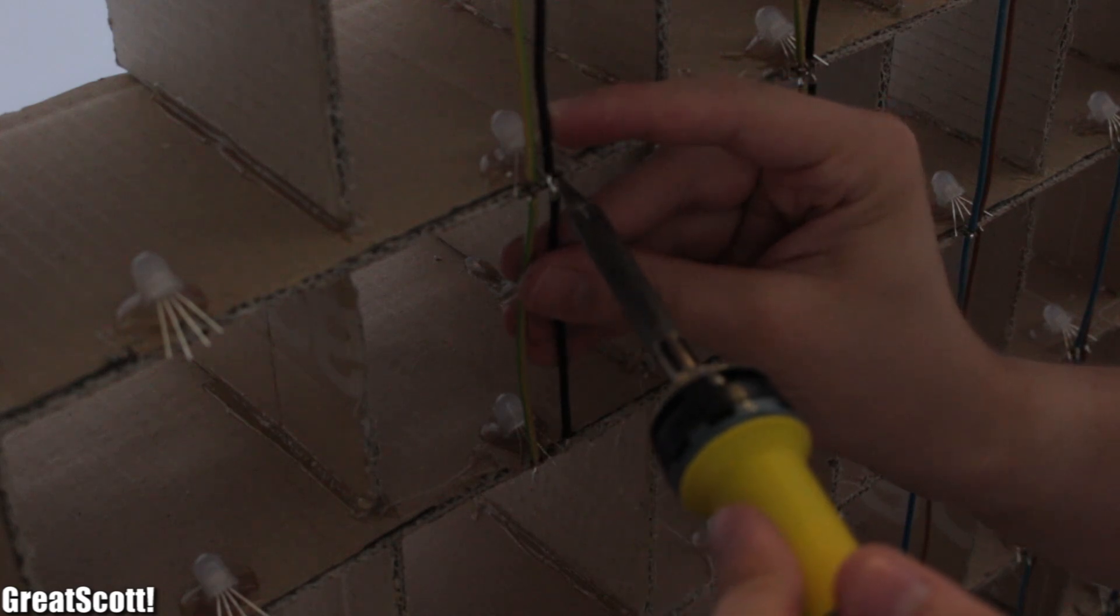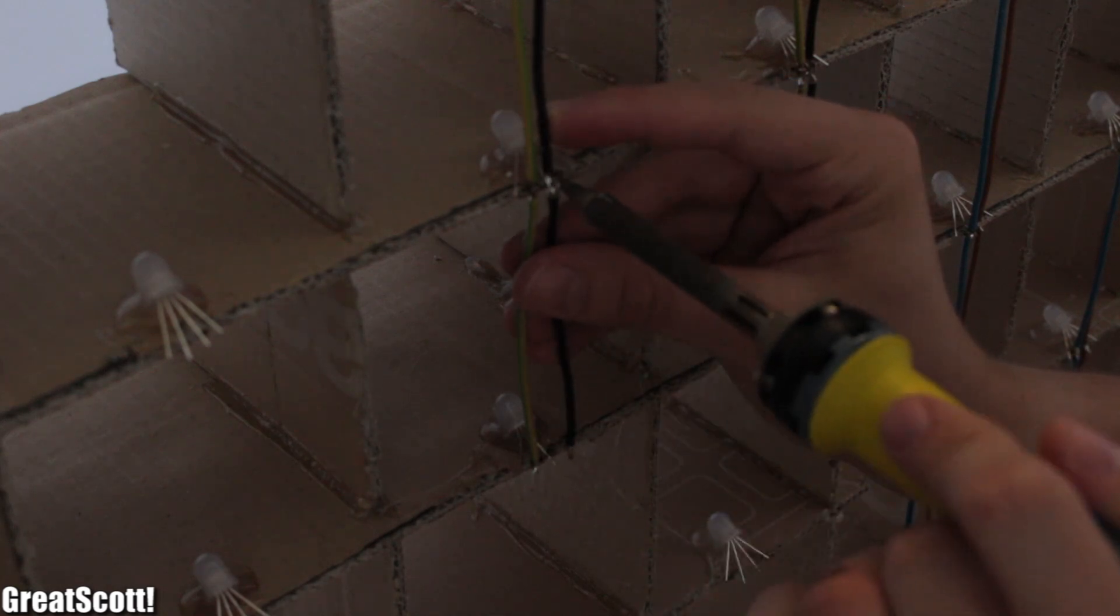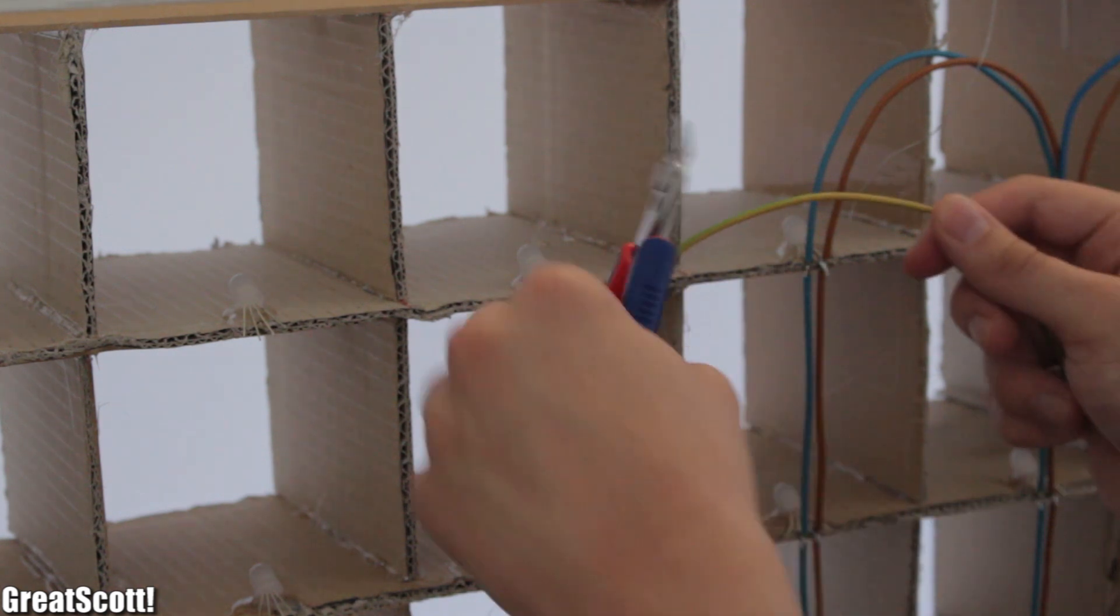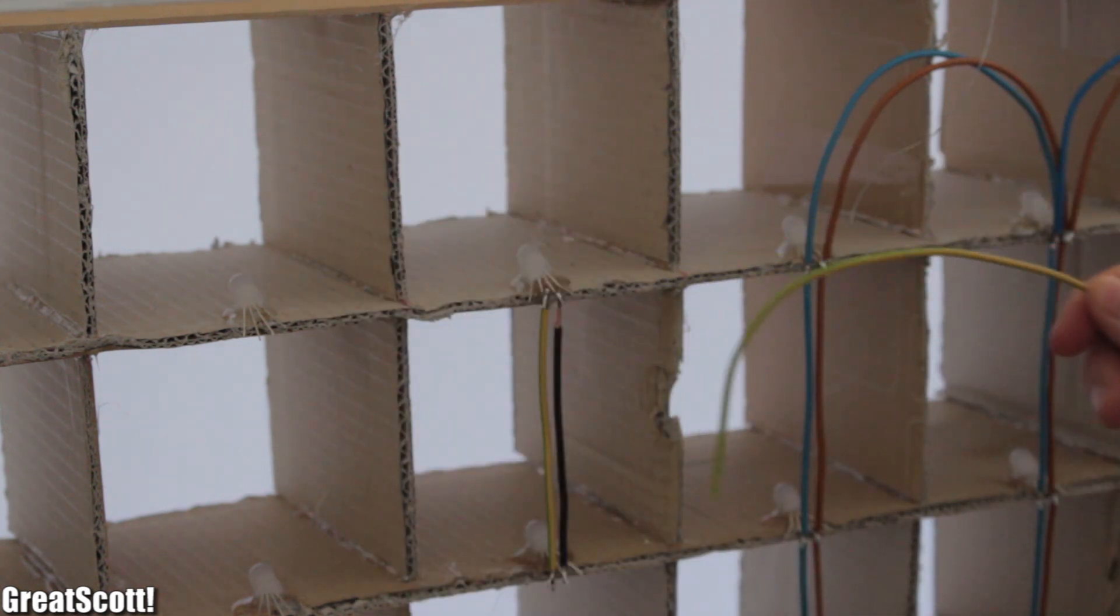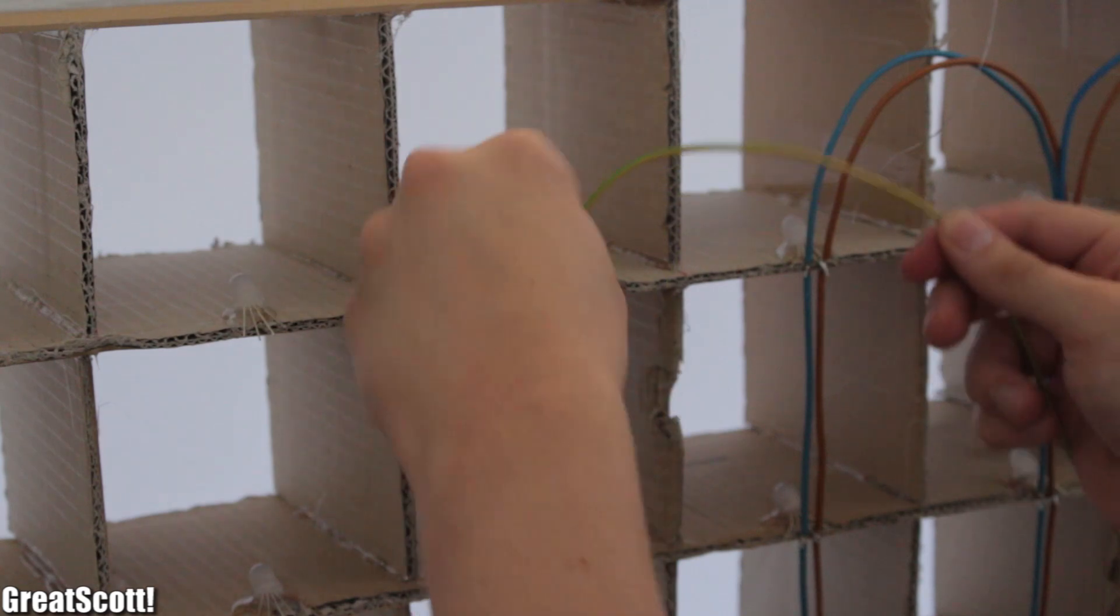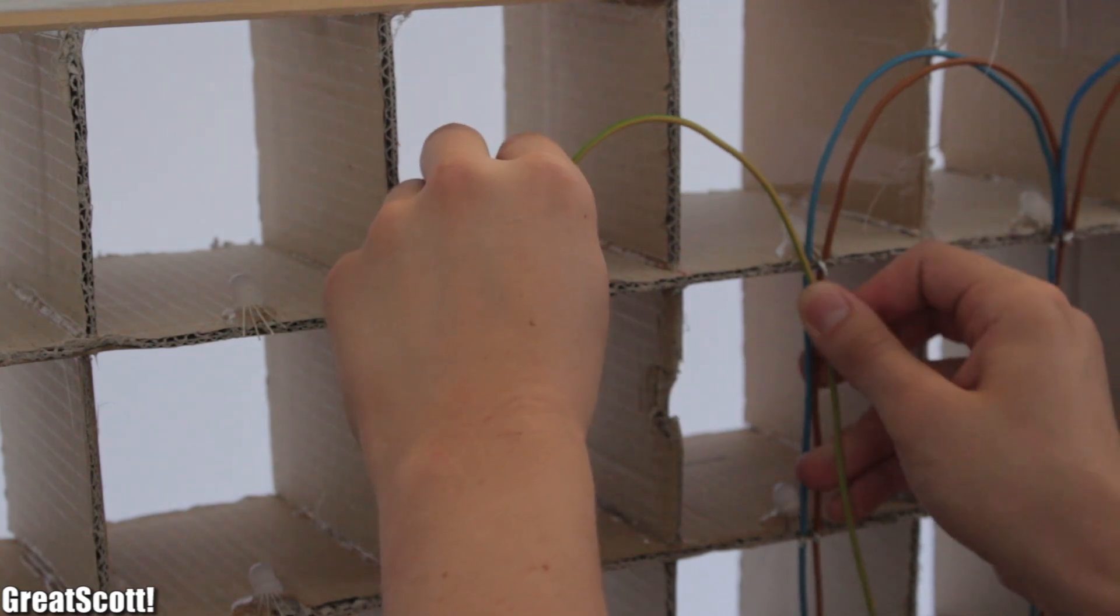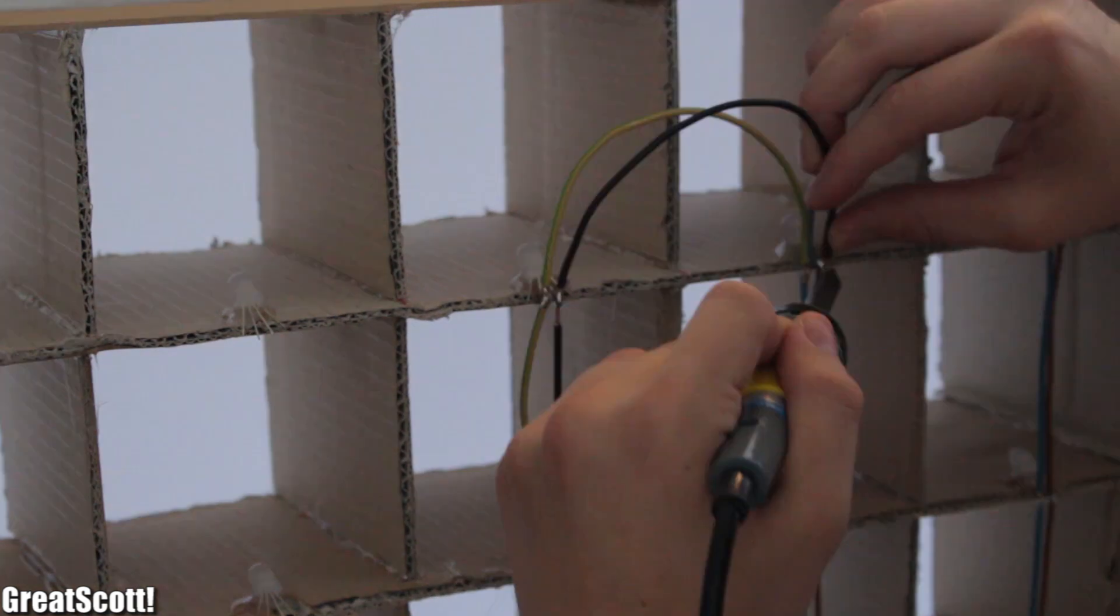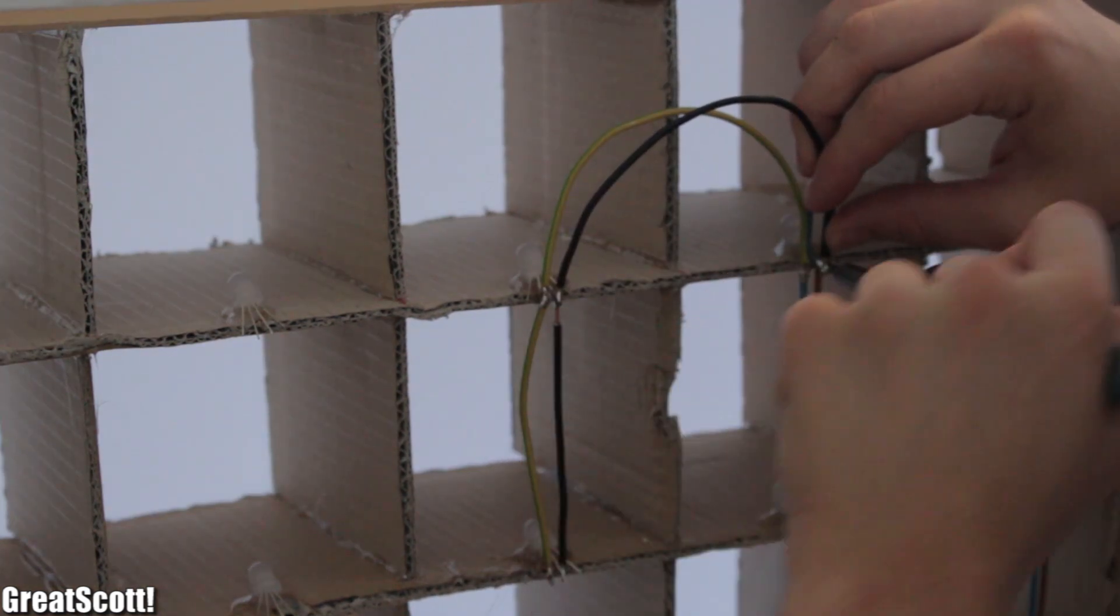This will take quite a while. And when all columns are done, it is still not done. We have to connect the rows VDD and ground pins as well. For that I bended the wire into this half circle shape and jumped from one column to the next, connecting VDD to VDD and ground to ground. Obviously.